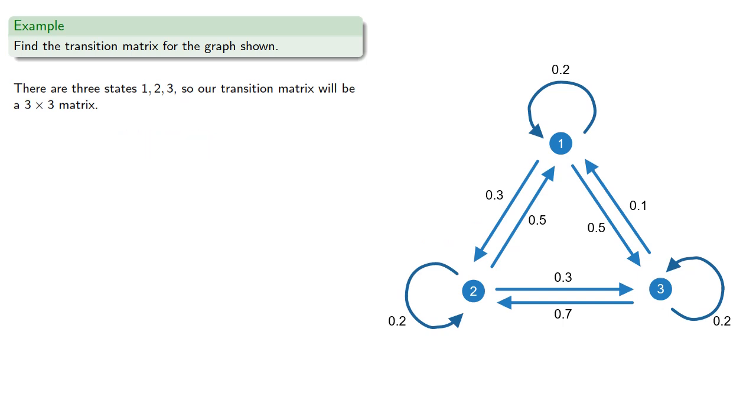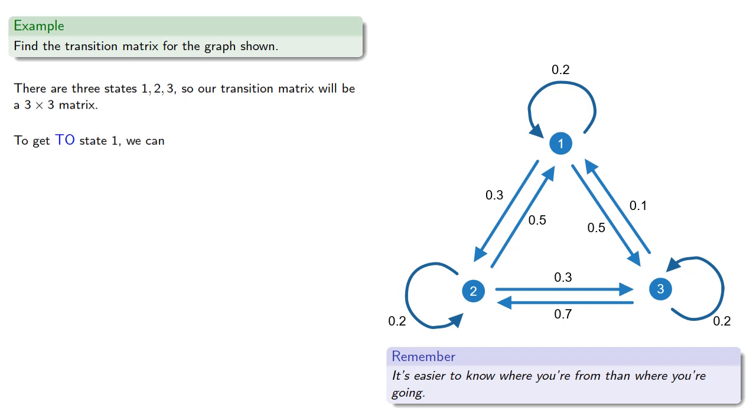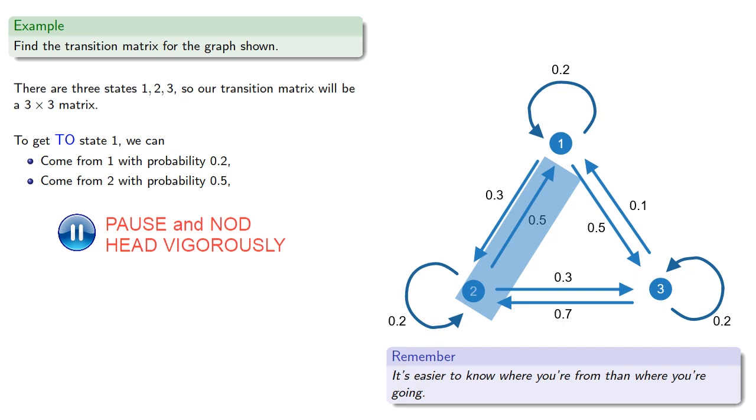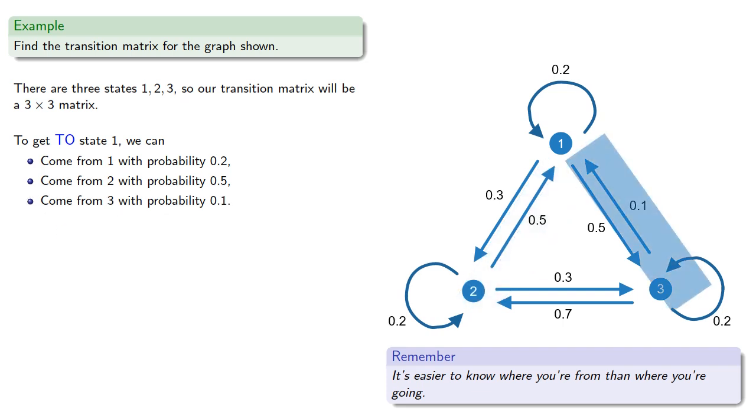And again, remember, it's easier to know where you're from than where you're going. So to get to state 1, this loop says we could have come from 1 with probability 0.2, we could have come from 2 with probability 0.5, or we could have come from 3 with probability 0.1.